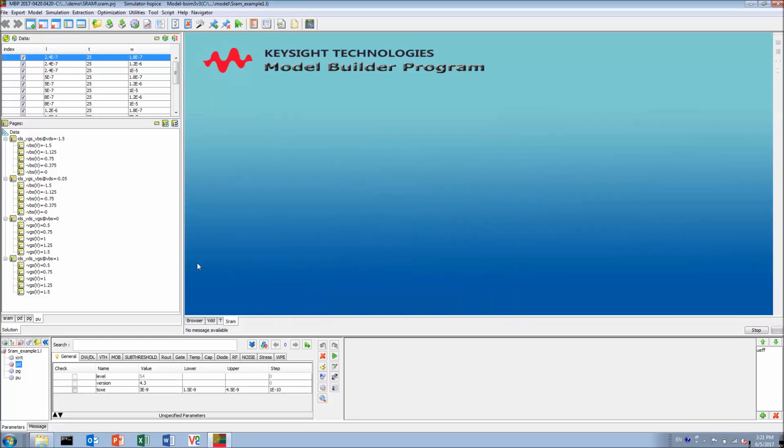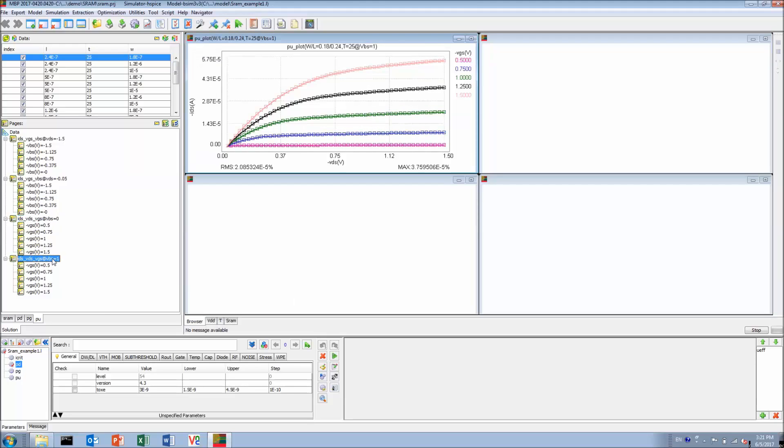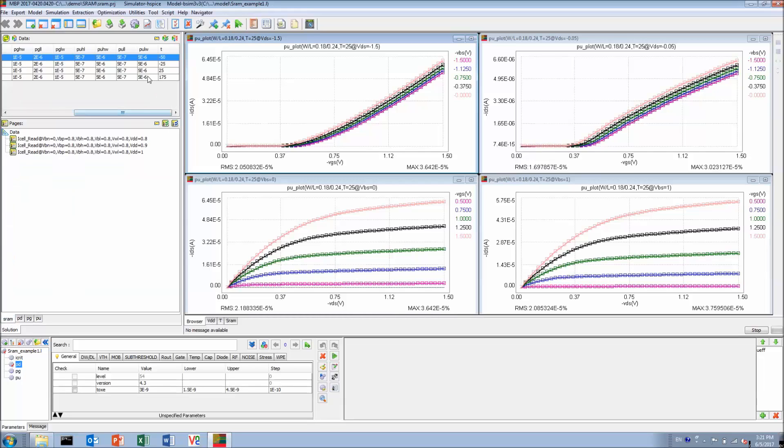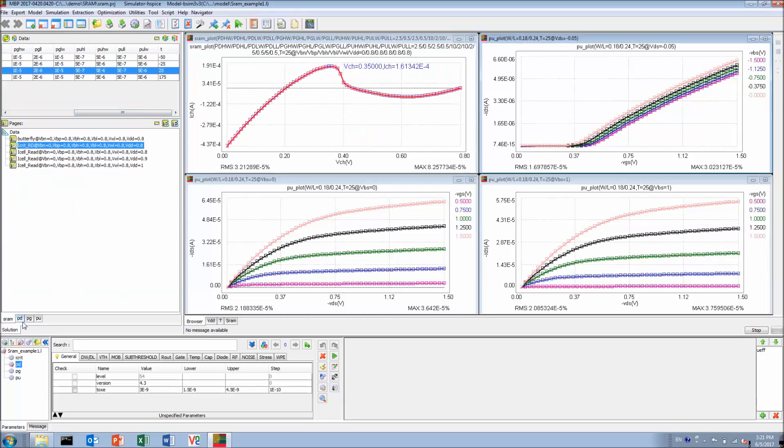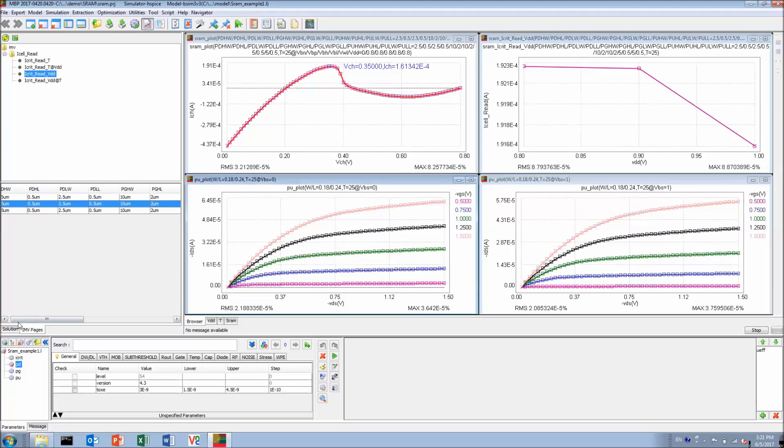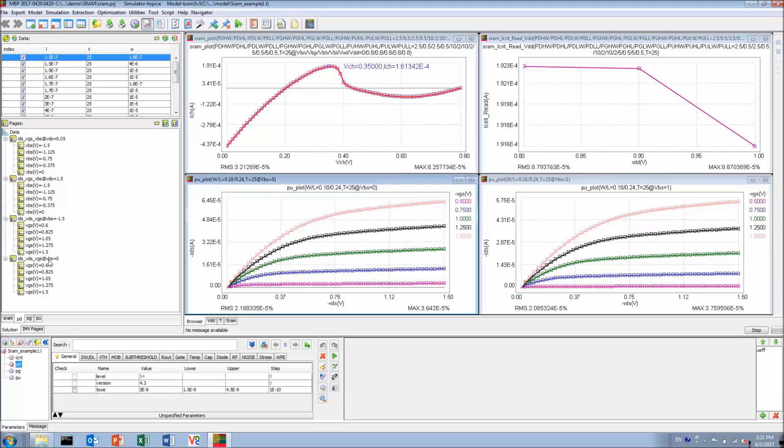Now switch to the default browser. We can go ahead to pick a few graphs of interest and display them together. Here, I'm going to bring the N-curve, critical read current versus VDD, and IDVD curves from pull down and pull up devices.